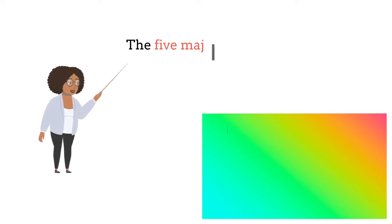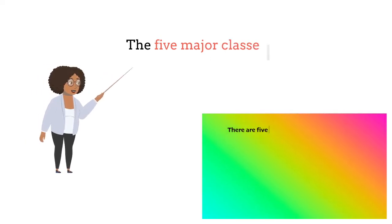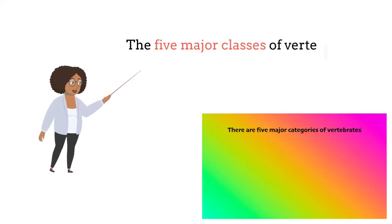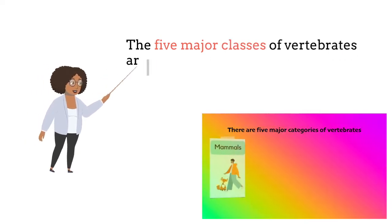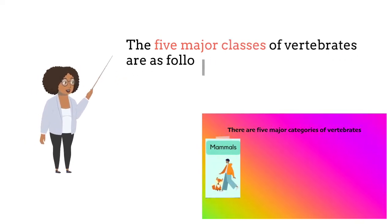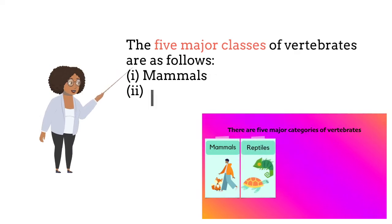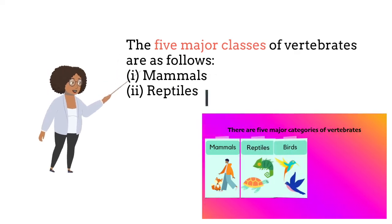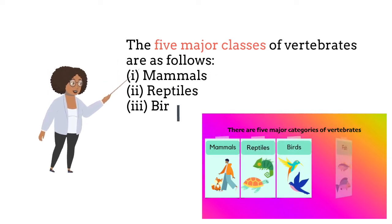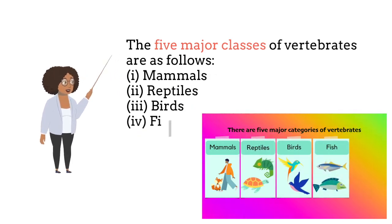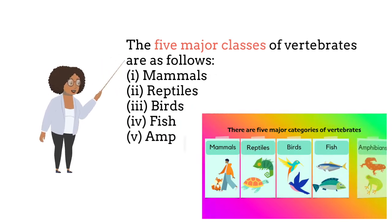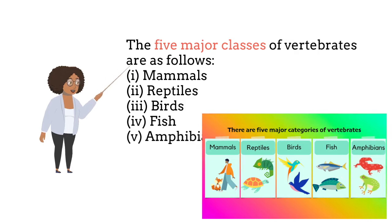There are five major classes of vertebrates: 1. Mammals, 2. Reptiles, 3. Birds, 4. Fish, and 5. Amphibians.